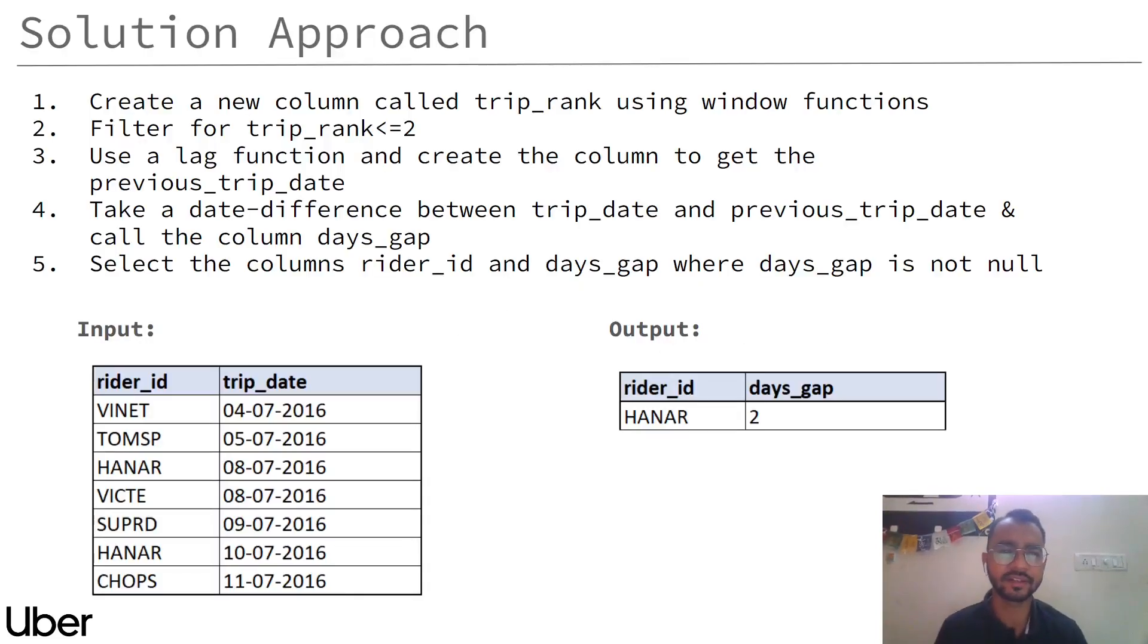Wherever you see in the problem statement that it is mentioned you need to get the first, the second, the second last, the last three, the first two, in all these cases you need to create a column which is called your rank column.